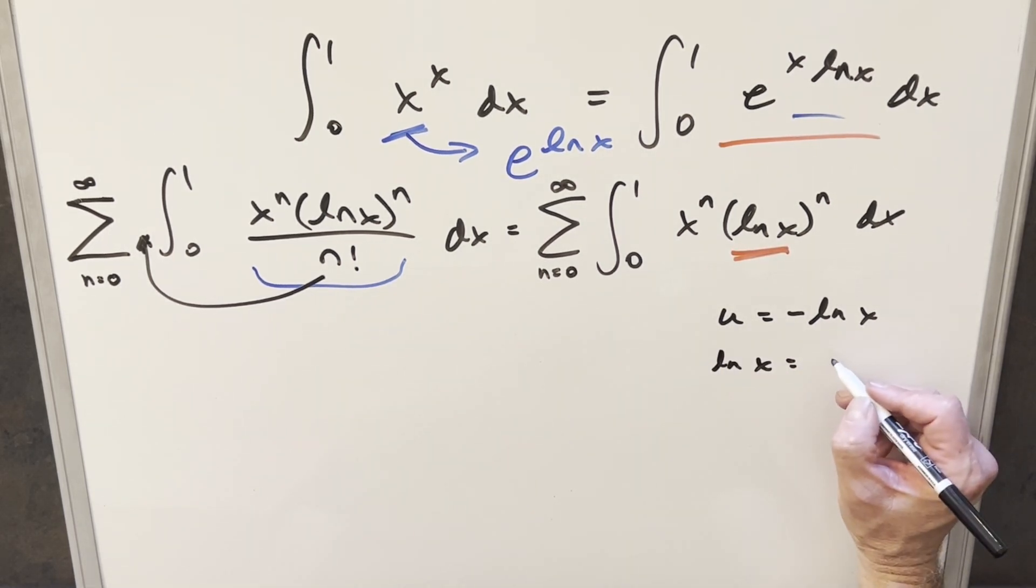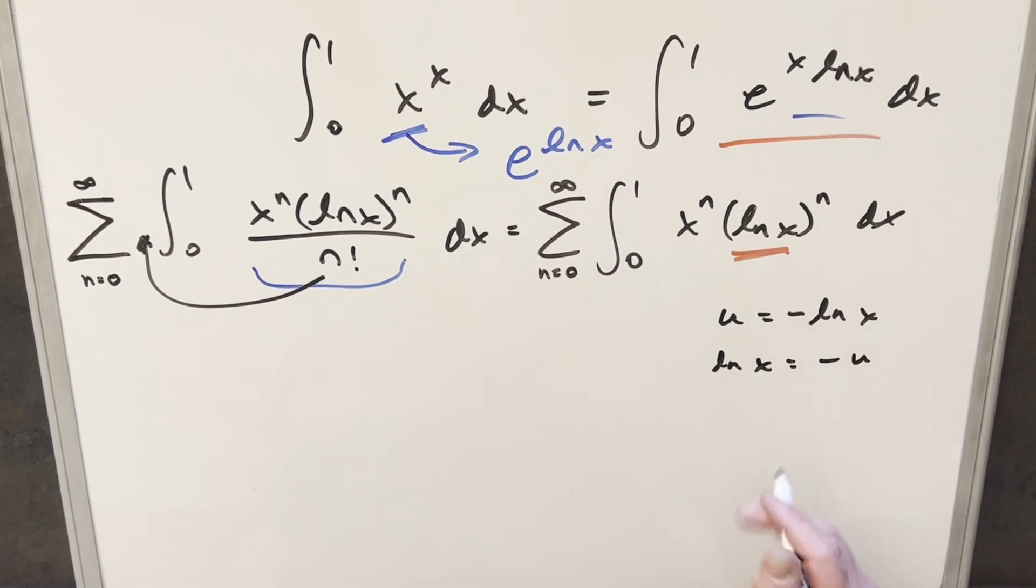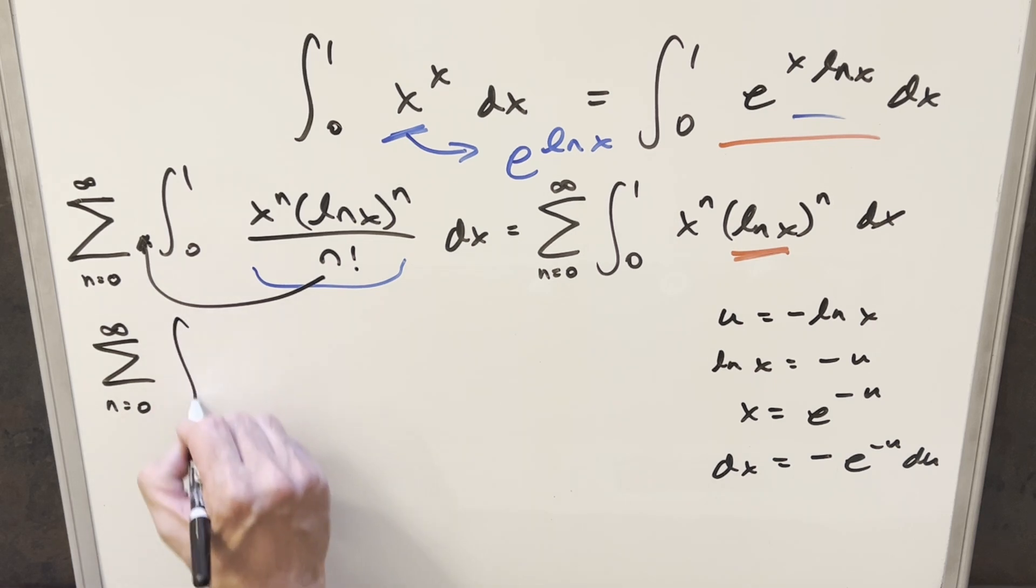And then of course, doing that, if we just rearrange this, we have natural log x equals minus u. Solving for x, we have x equal to e to the minus u. Then I'll take a derivative here. So to get the dx value, we just have minus e^(-u) du.